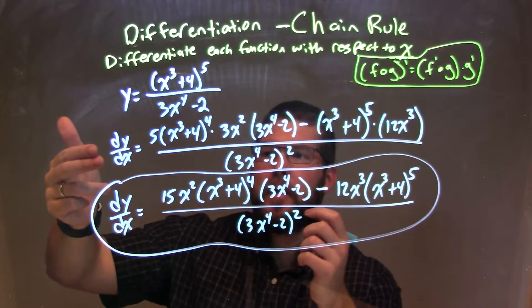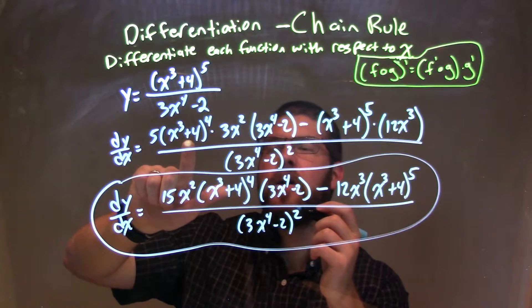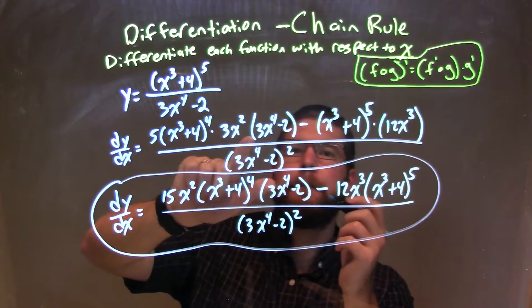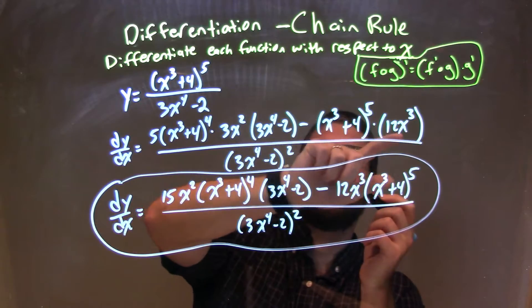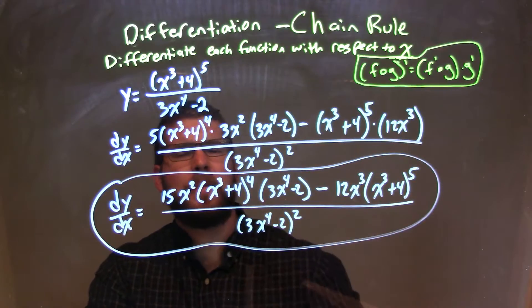From there, I took my derivative, I applied the quotient rule. I had the derivative of the numerator, and I applied the chain rule there, times the denominator, minus the numerator times the derivative of the denominator, all over the denominator squared.